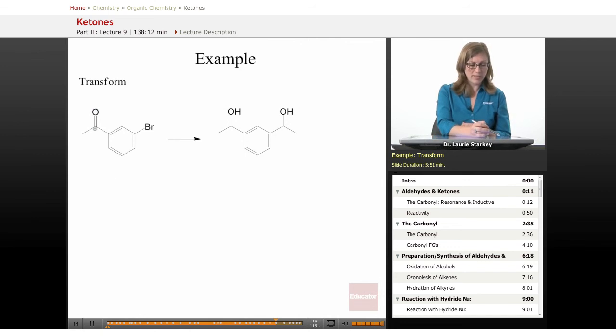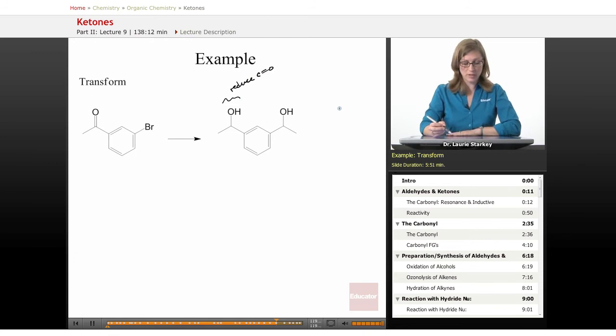We have a carbonyl that we're going to convert to an alcohol. Have we ever seen that transformation? Looks like a reduction, right? We need to reduce the carbonyl as part of our transformation. We also have this carbon as a bromine and now it has a carbon chain, so that's a new carbon-carbon bond.